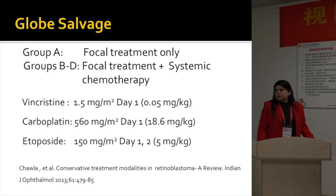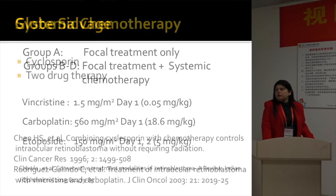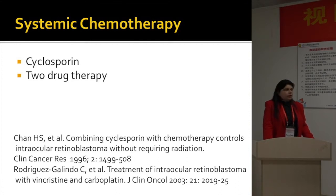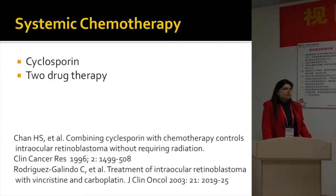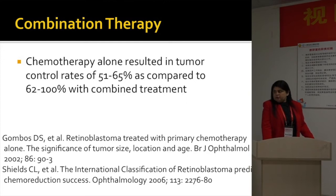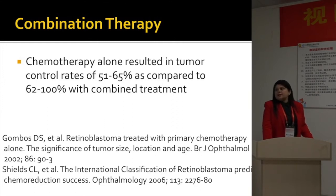We use VEC as the standard treatment for systemic chemotherapy combined with focal therapy. Some centers also use cyclosporine to overcome resistance, and there are papers showing that combining cyclosporine with chemotherapy controls intraocular retinoblastoma well. Because of concerns of leukemia with etoposide, some centers advocate two-drug chemotherapy with vincristine and carboplatin instead of three-drug chemotherapy for less advanced tumors. Combination therapy is what we use, like most centers worldwide, because studies have shown chemotherapy alone resulted in lower tumor control rates compared to combined treatment.